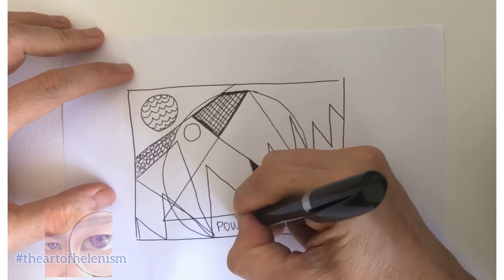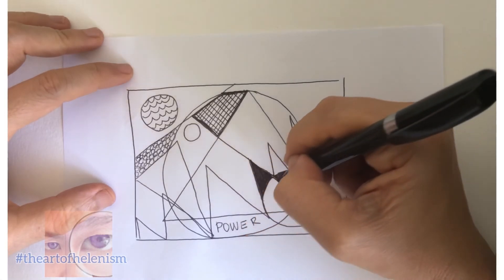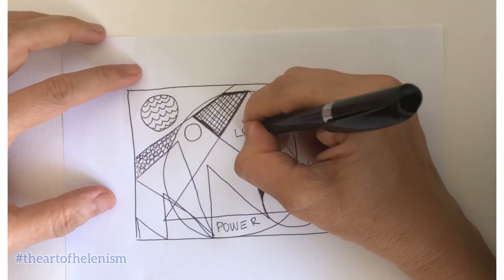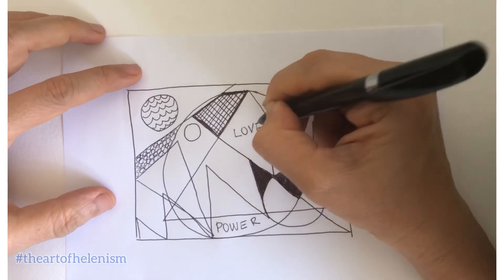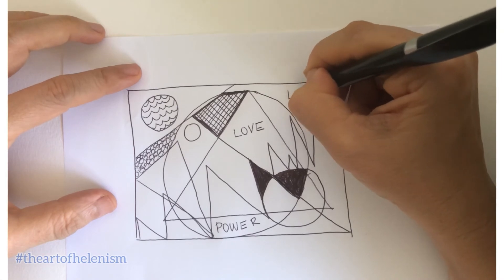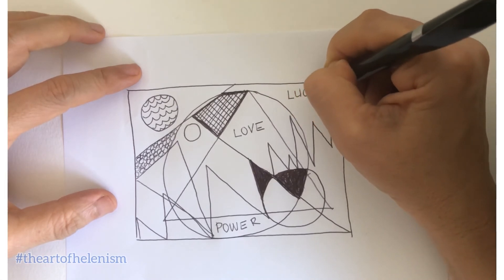Now pick a word, and write it down in one of the shapes. With a smile, I have chosen the word power. And the word love. And the word lucky.